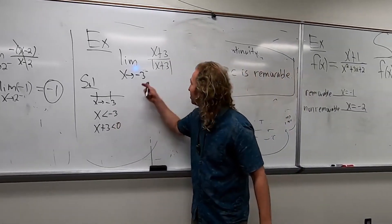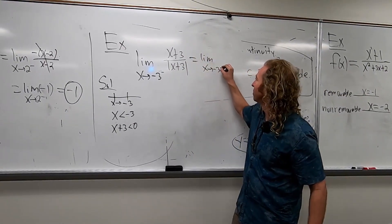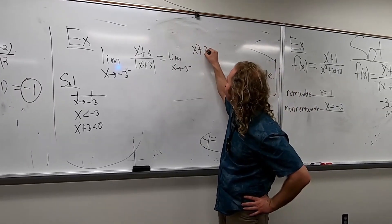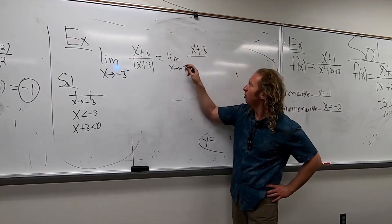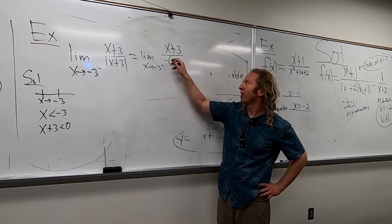So now, that means that we replace the x plus three with a negative, right? So this will be this. And then we have x plus three over, and then it will be negative parentheses x plus three.